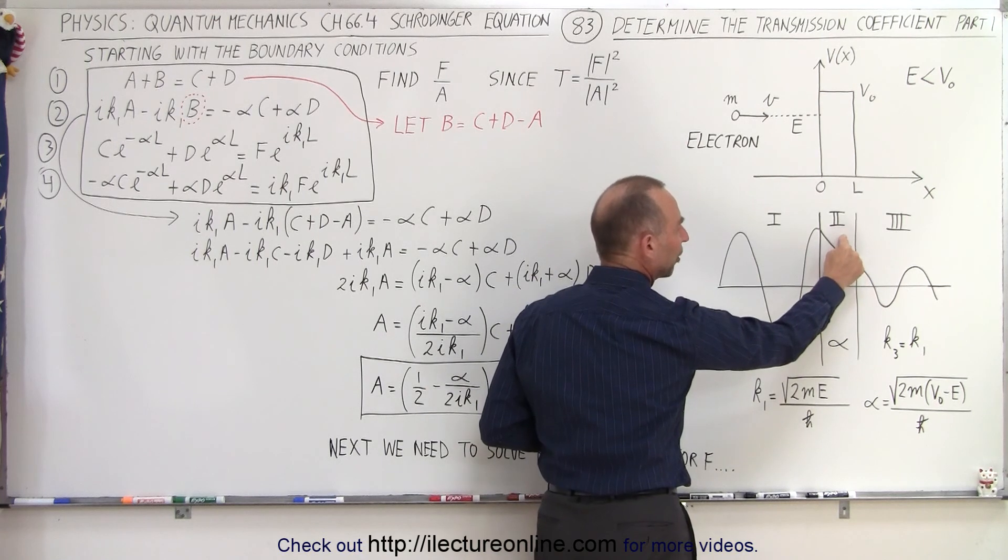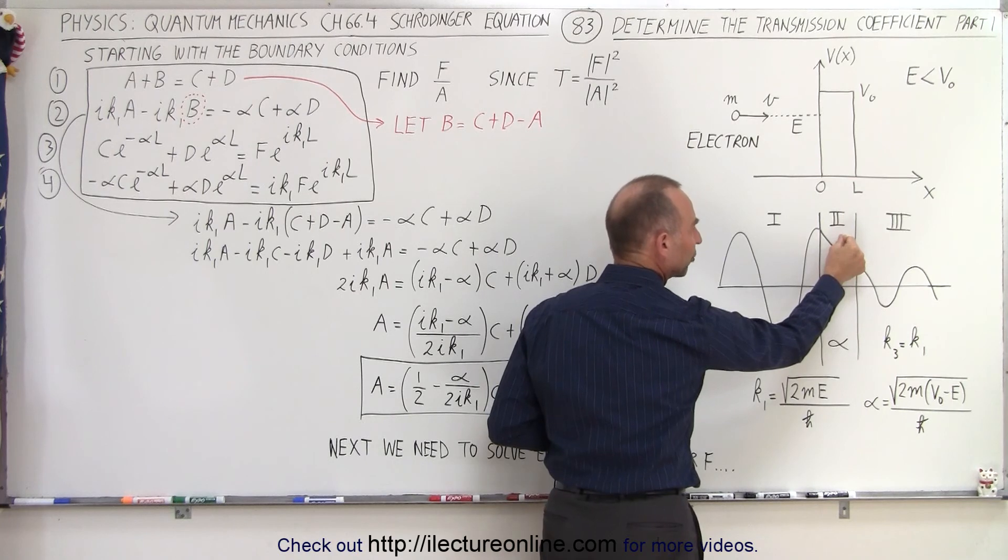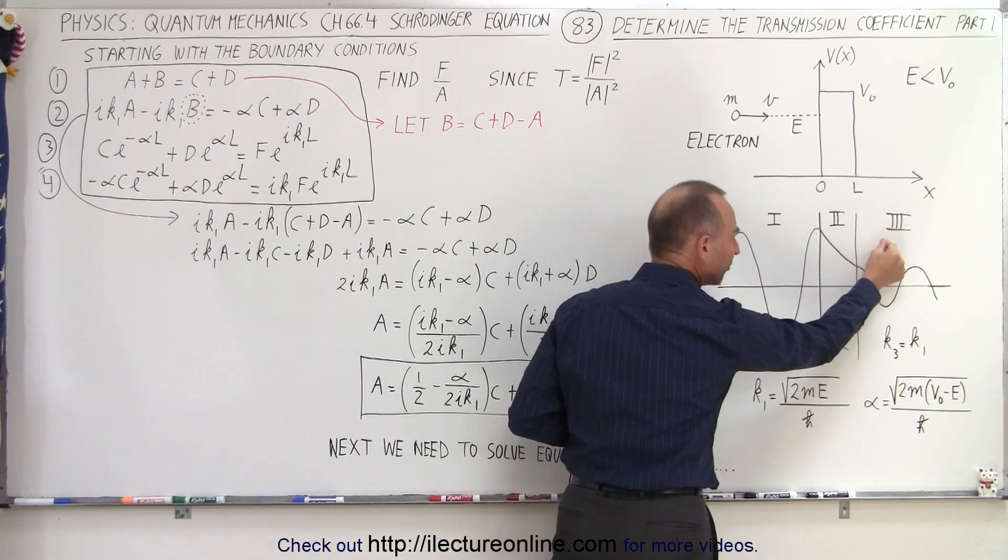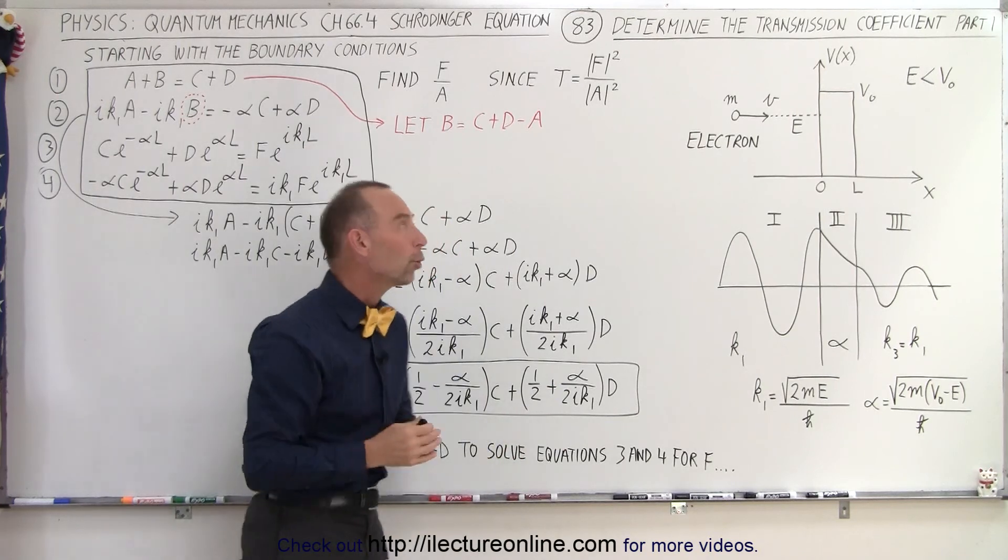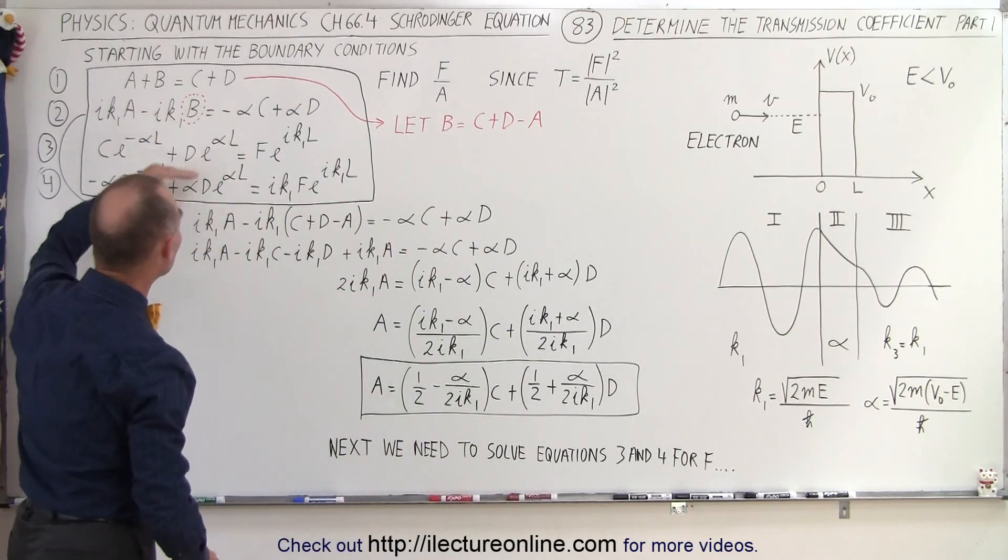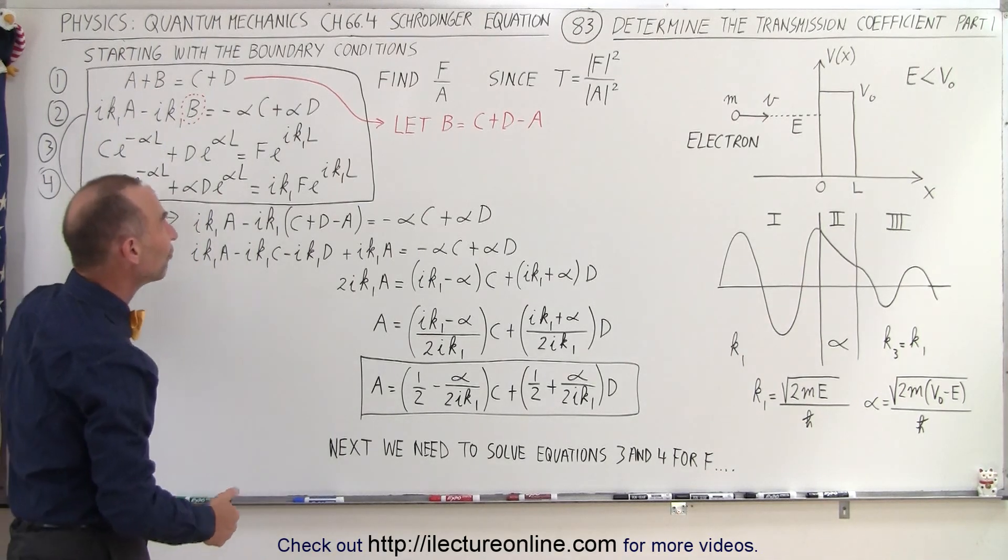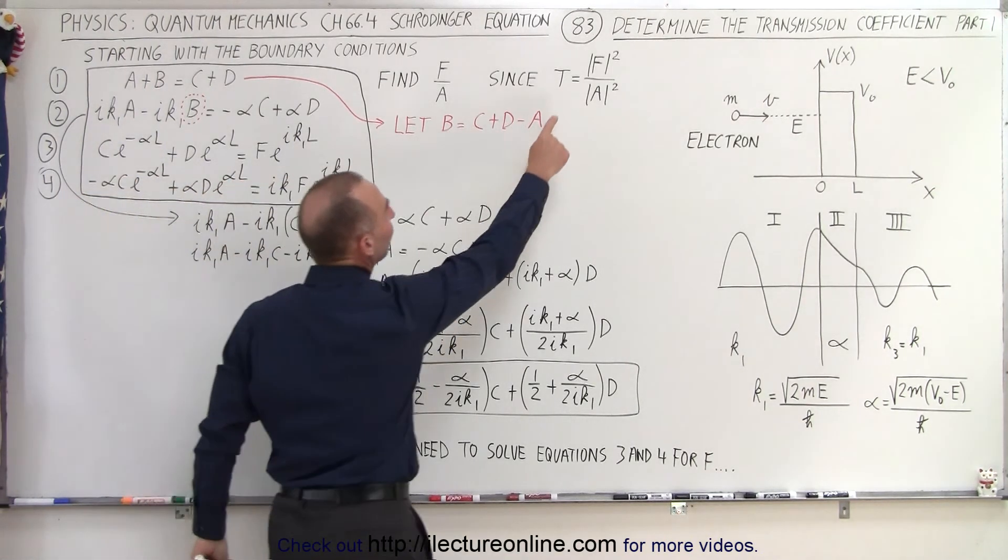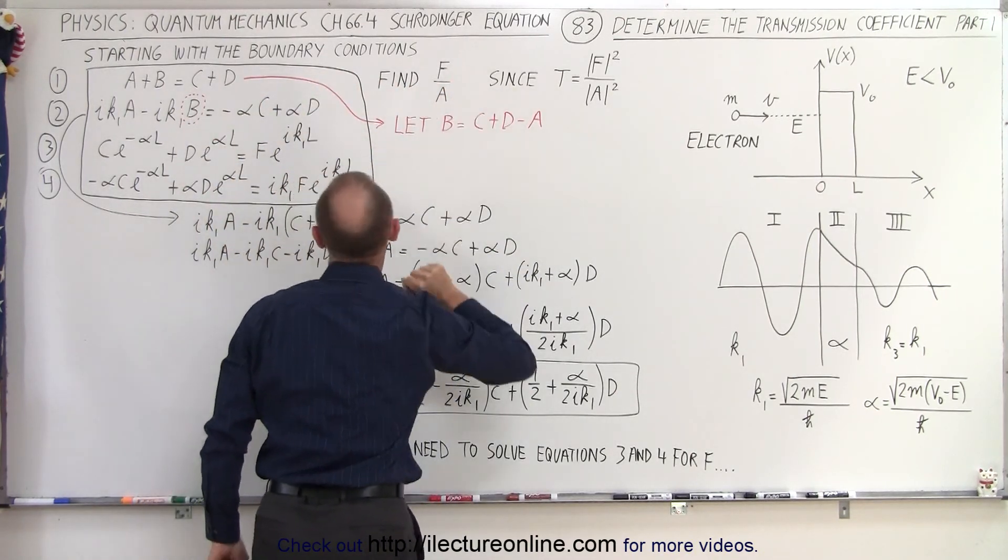We set the wave function of region 2 equal to the wave function of region 3, and we set the derivative of the wave function of region 2 equal to the derivative of the wave function in region 3, which gave us four equations. These are the four equations which you've seen in previous videos, that we then use to find what we call the transmission coefficient by solving these four equations for the fraction f over a.